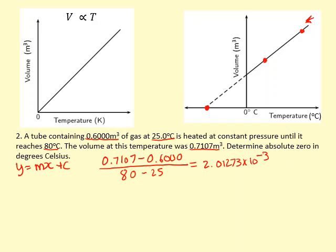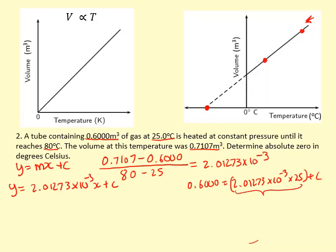So the equation of the line is V equals 0.00201273 times T plus c. To find the y-intercept c, I'm going to use the 25°C data. If I use 0.600 m³ at 25°C, I can find c. This here is 0.05318, so if I rearrange that, I get c equals 0.54968.